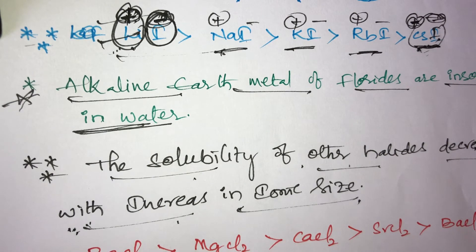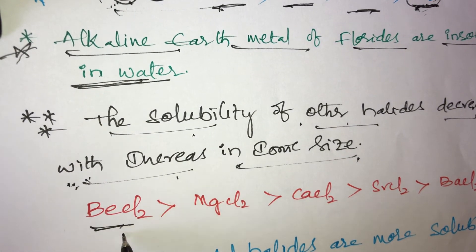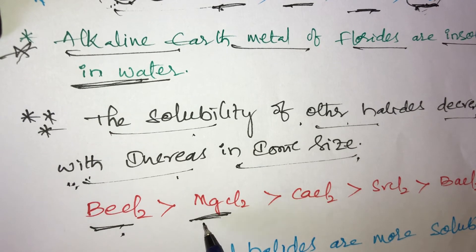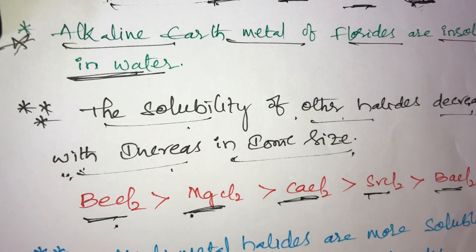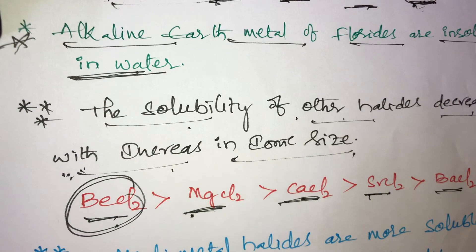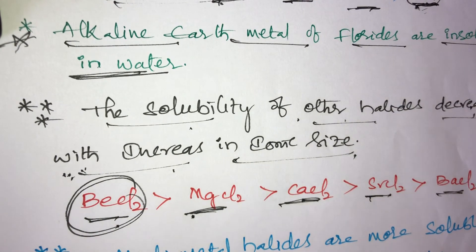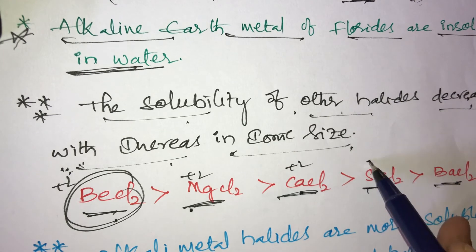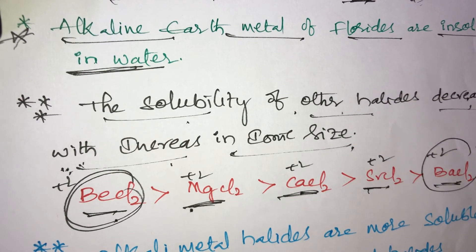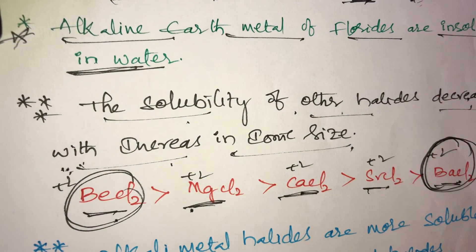If ionic size increases, solubility decreases. For example: beryllium chloride is highly soluble than magnesium chloride, magnesium chloride is greater than calcium chloride, calcium chloride is greater than strontium chloride. Beryllium chloride is highly soluble in water due to its small ionic size compared to the others in Group 2A.